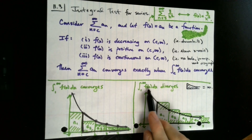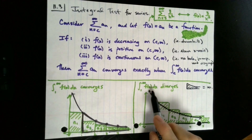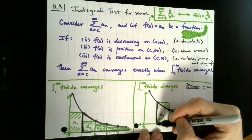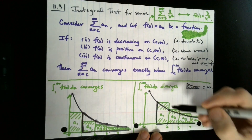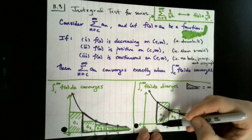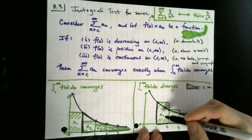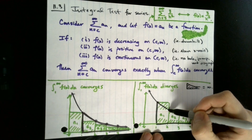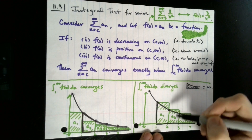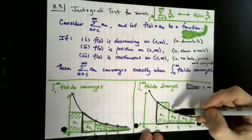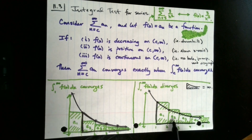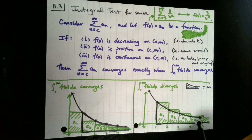This function was constructed precisely from the terms of our series, which means what our function evaluates to at 1 is what our series evaluates to at 1. So the height of the function at f of 1 is a sub 1. I'm going to go over one unit and draw a bar — this rectangle is one unit wide and a_1 units tall, so its area is a_1. The second bar is as tall as f of 2, which equals a sub 2, so its area is a_2. Similarly, the area of subsequent bars is a_3, a_4, and so on.